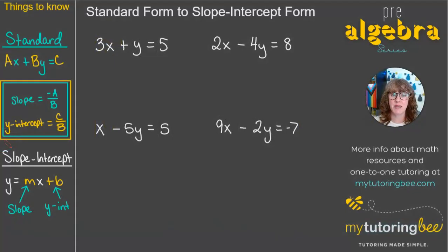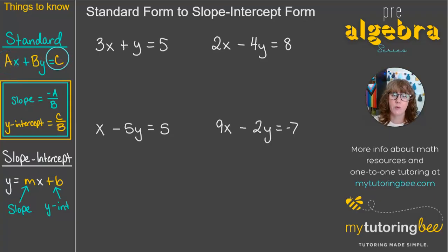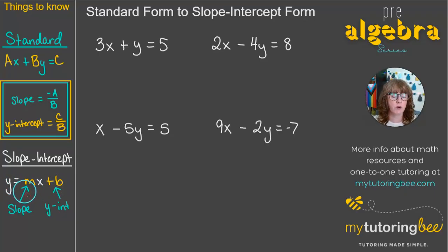Let's take a quick peek at the format for both standard form and slope-intercept form. In standard form we've got AX plus BY equals C, and A's, B's, and C's need to all be integers, and A specifically needs to be a positive integer. We're going to take that format and change it into slope-intercept form, Y equals MX plus B, where M represents the slope and B represents the Y-intercept.